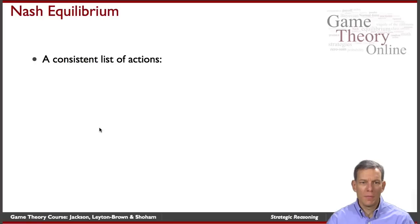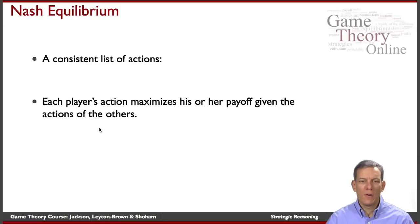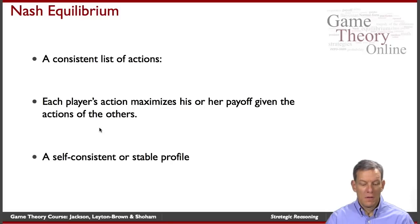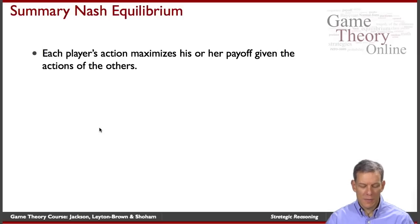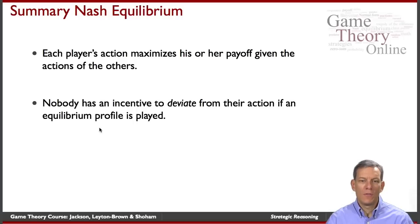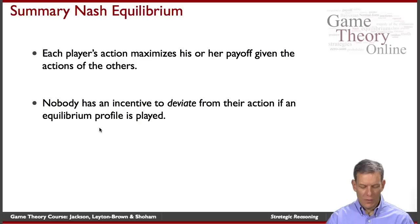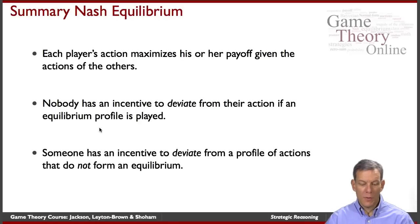Nash equilibrium — basic ideas: a consistent list of actions where each player is maximizing his or her payoffs given the actions of the other players. It should be self-consistent and stable. Each player's action is maximizing what they can get given the other players, so nobody has an incentive to deviate from their action if an equilibrium profile is played. Someone does have an incentive to deviate from a profile of actions that does not form an equilibrium.